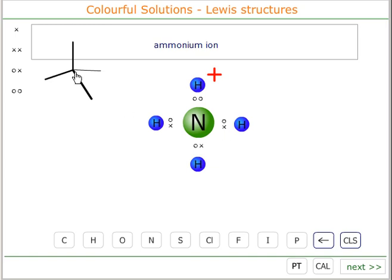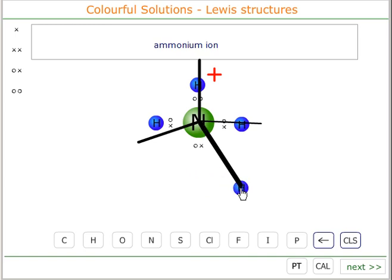So this will adopt a tetrahedral arrangement, a tetrahedral organization. If we drop the tetrahedral shape over the nitrogen, you'll see that one particle can adopt each part of the tetrahedron.